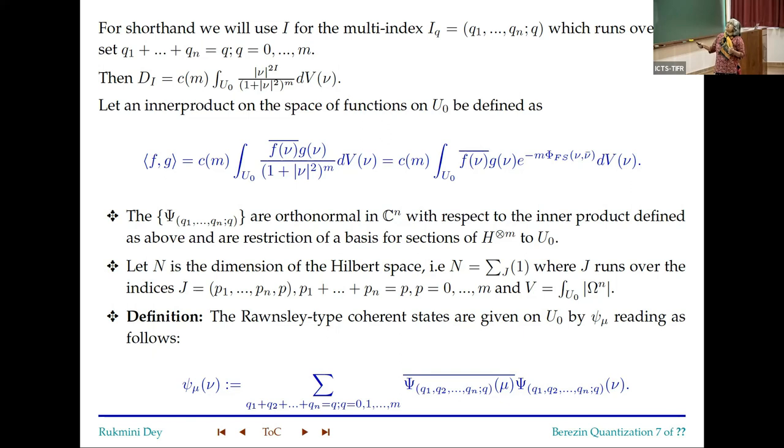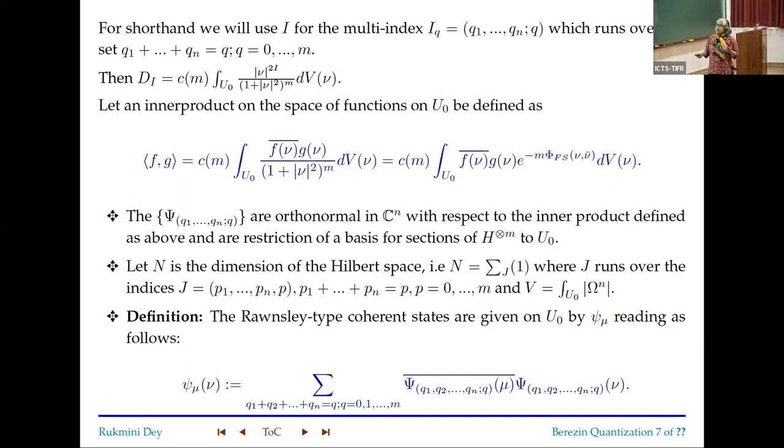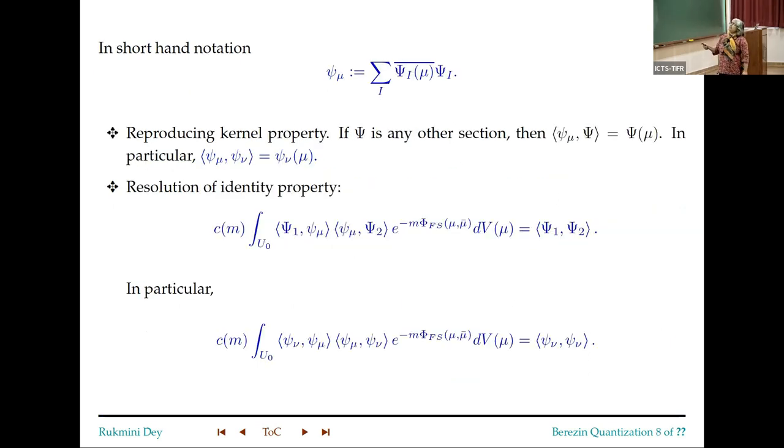And the inner product is this. Notice that there is a e^{-m times the Kähler potential} and there is a c_m in front. And you can define the Rawnsley-type coherent states using this orthonormal basis like this. So sum over all such states, you evaluated at μ and this one is evaluated at μ. This is ψ_{μν}. This is, by the way, called the reproducing kernel. In mathematics, in physics, they are called the coherent state μ evaluated at ν.